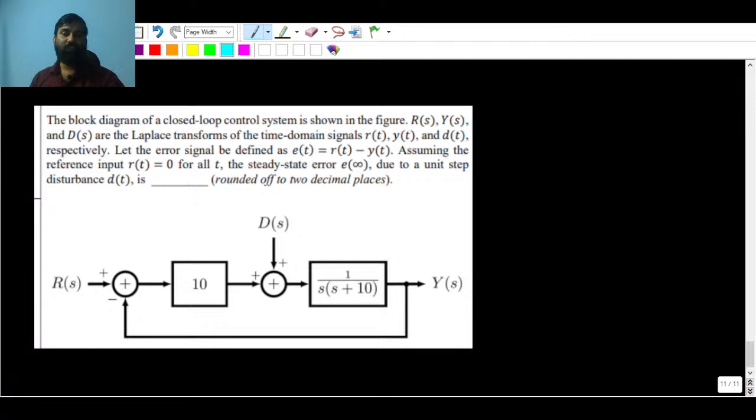In this question, there are a couple of inputs - one is the reference input and one is the disturbance input acting on it. We have to find the steady state error. Basically we have to calculate that and I am also going to highlight where you are going to commit mistakes.